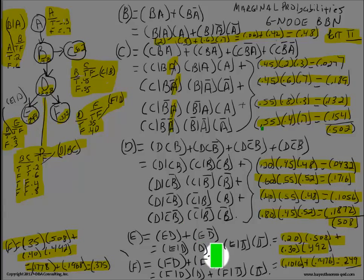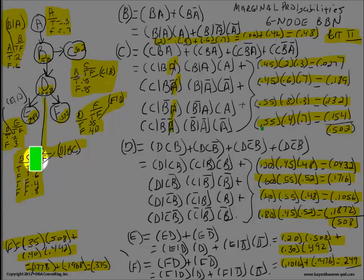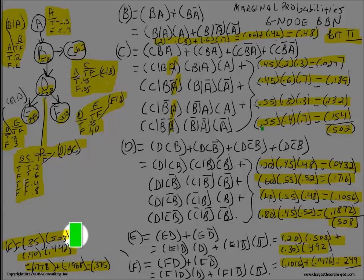Lastly, probability of F equals P(F,D) plus P(F, not-D). Chain rule breaks this down: probability of F given D times probability of D plus probability of F given not-D times probability of not-D. Probability of F given D is 0.35, times probability of D which is 0.508, plus probability of F given not-D which is 0.4, times probability of not-D which is 1 minus 0.508 = 0.492. Multiply 0.35 × 0.508 = 0.1778. Multiply 0.4 × 0.492 = 0.1968. Add these together, you get 0.375 for the marginal probability of F.